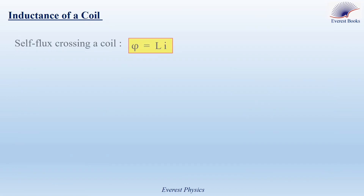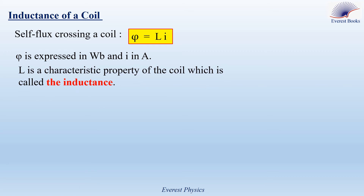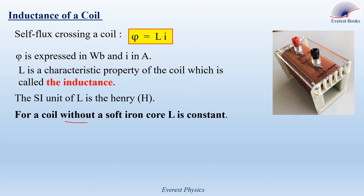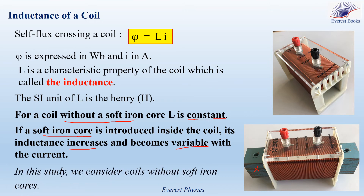Inductance of a coil: The self-flux is directly proportional to the current in the coil and is given by the formula φ = L × I. In SI units, φ is expressed in Weber and I is expressed in Ampere. L is a characteristic property of the coil called the inductance of the coil, and its SI unit is the Henry, denoted by H. For a coil without a soft iron core, L remains constant. If a soft iron core is introduced, the inductance increases and becomes variable with the current. In this study, we consider coils without a soft iron core, so L remains constant.